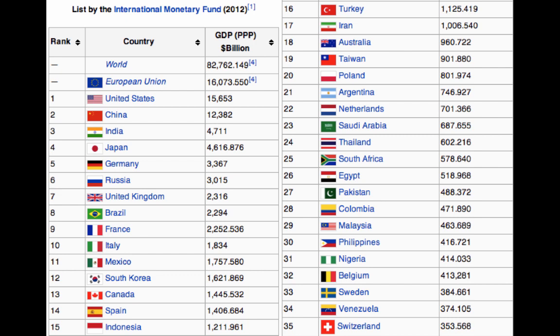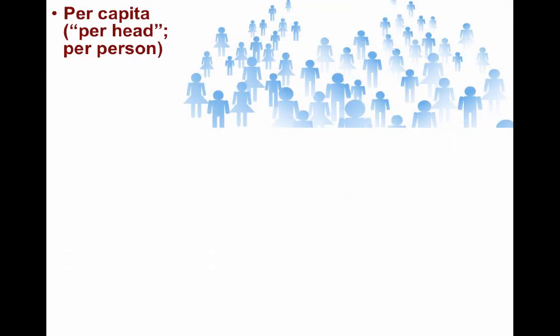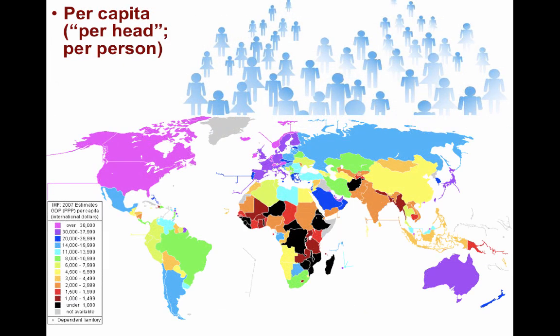To understand the relative wealth of individuals, we look at per capita — meaning per head, per person. This map shows GDP with purchasing power parity per capita. From region to region you see a disparity between the haves in the United States, Europe, or Japan, compared to those in the middle such as Russia and Eastern Europe or South America, to the least affluent in places like Sub-Saharan Africa or war-torn Afghanistan.